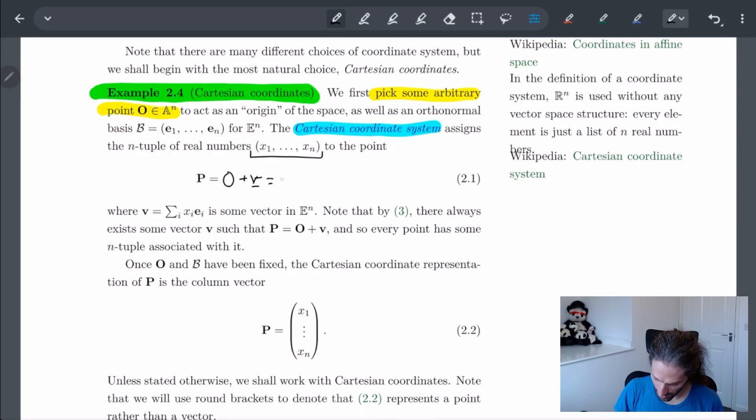So in other words, what we have is O plus x₁e₁ plus x₂e₂ plus... plus xₙeₙ. So what we basically have is these components.